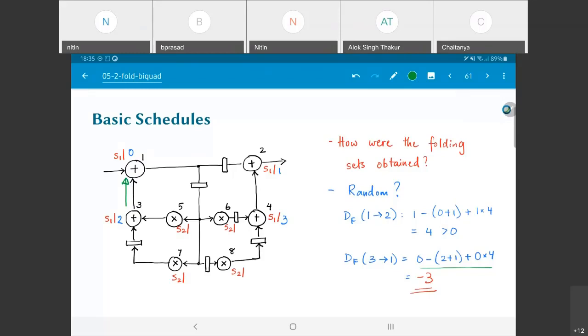Which basically tells me that this particular assignment, trying to just randomly put 0, 1, 2, 3 as the different time instances for these operations, had a problem.